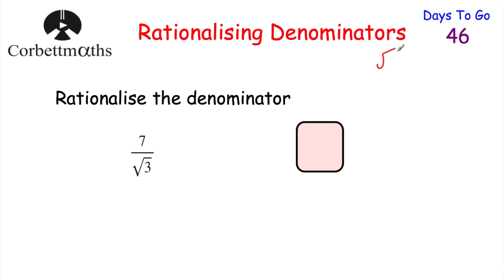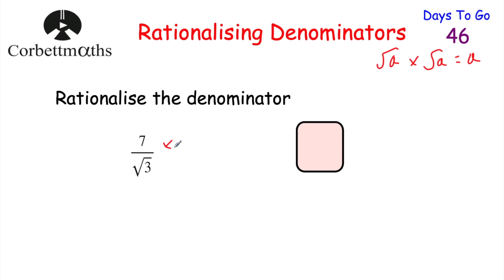Remembering that √a times √a equals a — for instance, the square root of 5 multiplied by the square root of 5 is the square root of 25, which is 5. So if you multiply a surd by itself you get a rational number. So for the fraction 7 over root 3, if we multiply both the numerator and the denominator by root 3, it'll rationalize the denominator.